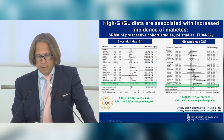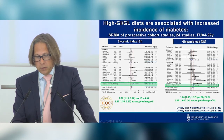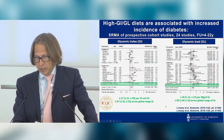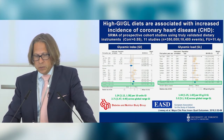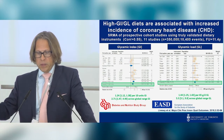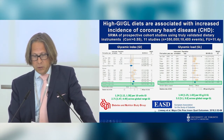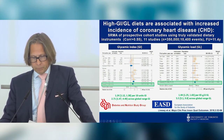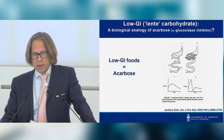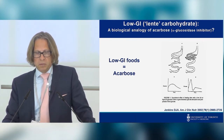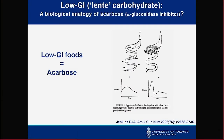Looking over the global range of exposure to GI and GL, we see very large estimates for diabetes risk and for cardiovascular disease. This work was commissioned by the Diabetes Nutrition Study Group to inform the update of EASD guidelines coming out this year. We also have a biological analogy supporting causality via Bradford Hill criteria: Acarbose, an alpha-glucosidase inhibitor, effectively converts the diet to a low glycemic index diet and has shown diabetes risk reduction and cardiovascular event reduction in randomized trials.